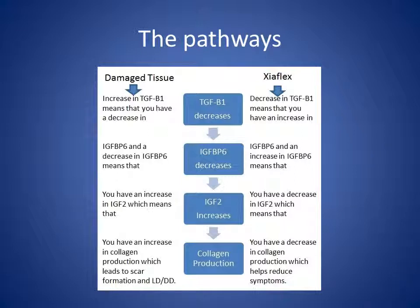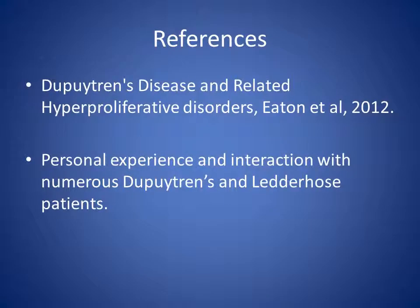There's not really a lot known about these conditions. Some of this information came from the Dupuytren's Disease and Related Hyperproliferative Disorders book that came out earlier in 2012, and also from personal experience and interaction with lots of different patients, which is where the family tree came from.